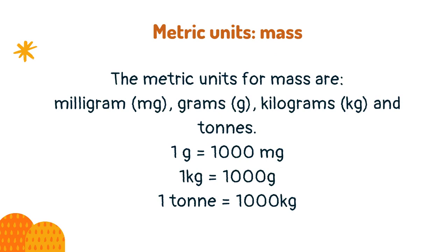The metric units for mass are milligrams, grams, kilograms, and tons. One gram is 1000 milligrams. One kilogram is 1000 grams. One ton is 1000 kilograms.